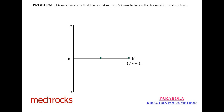Now we have to locate the midpoint. Why do we locate the midpoint? The eccentricity of the parabola is 1, that is E equal to 1 by 1. 1 plus 1 is 2, so we have to divide the CF line into 2 equal parts and name it as V. Now CV equal to 25 mm, VF equal to 25 mm, that is 2.5 cm each.